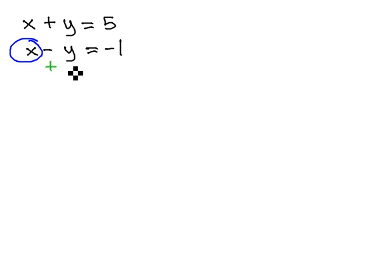So, let's get it alone. We can do that by adding y to both sides. It tells us that x is equal to y minus one or negative one plus y.